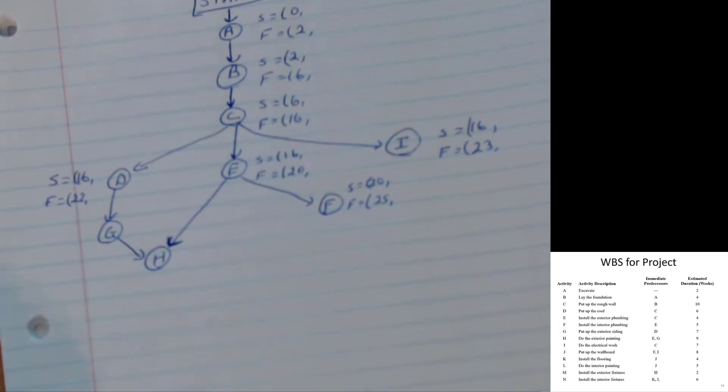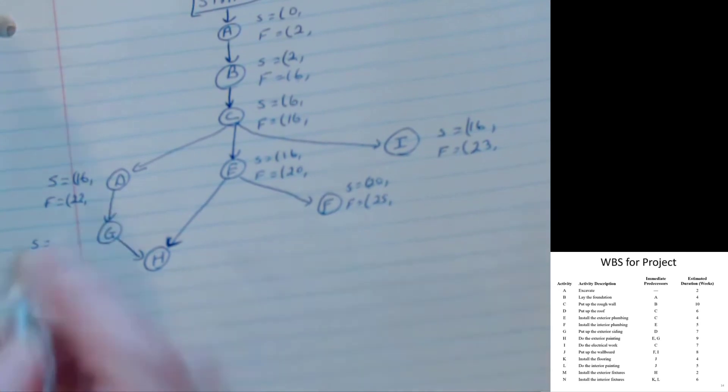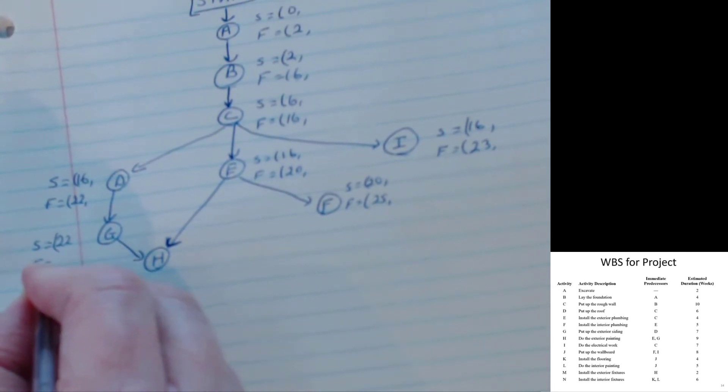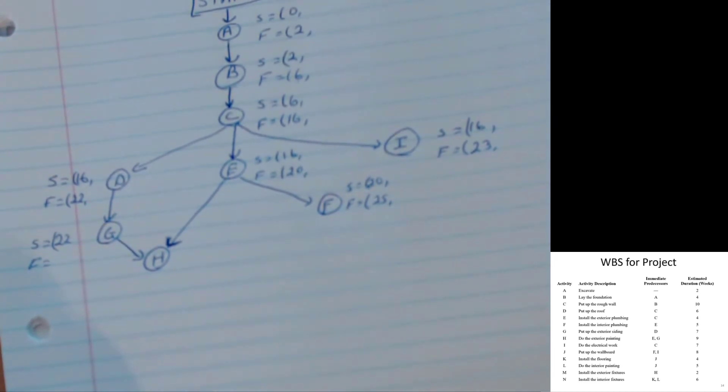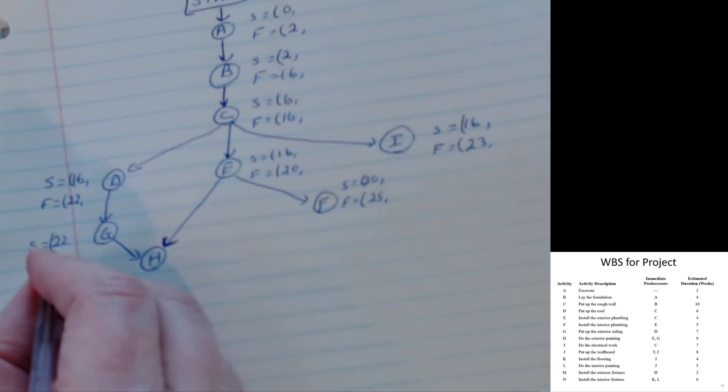What do I know about G? When can G start? G needs D to be done. So G can start in period twenty-two. Finishes about seven weeks later in period twenty-nine.